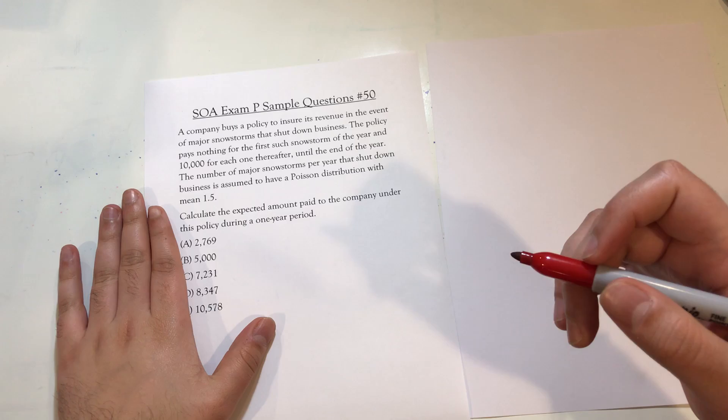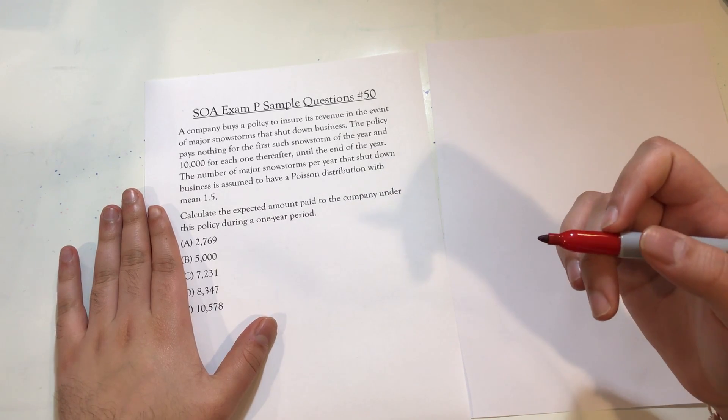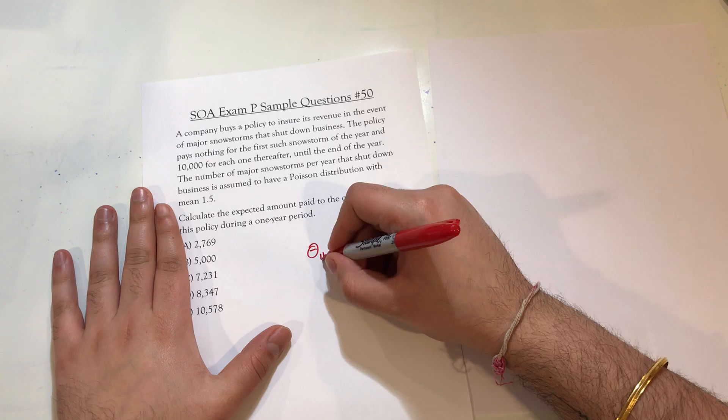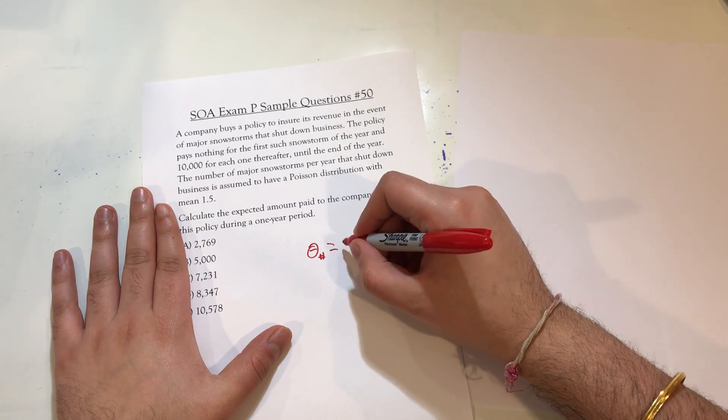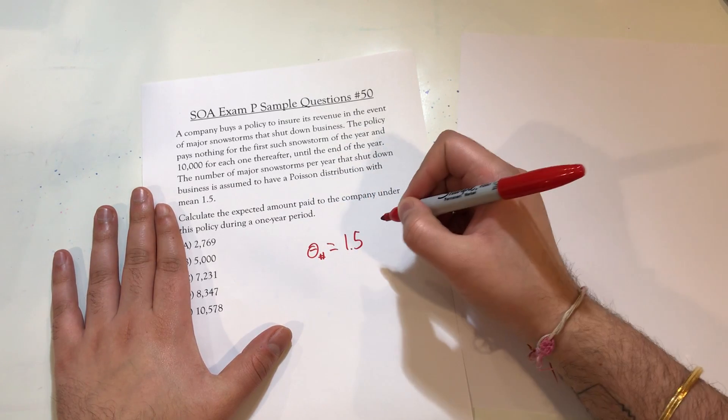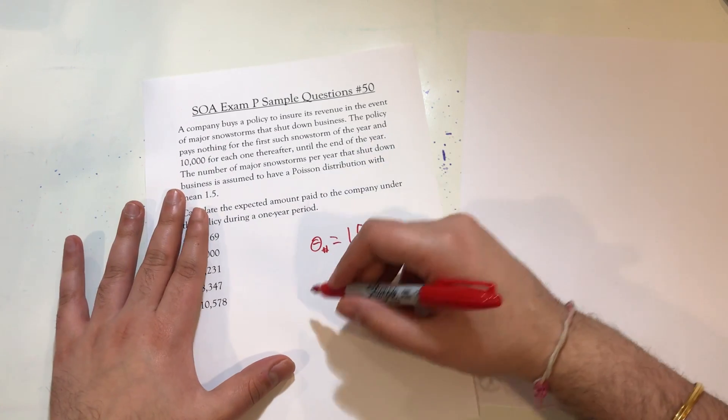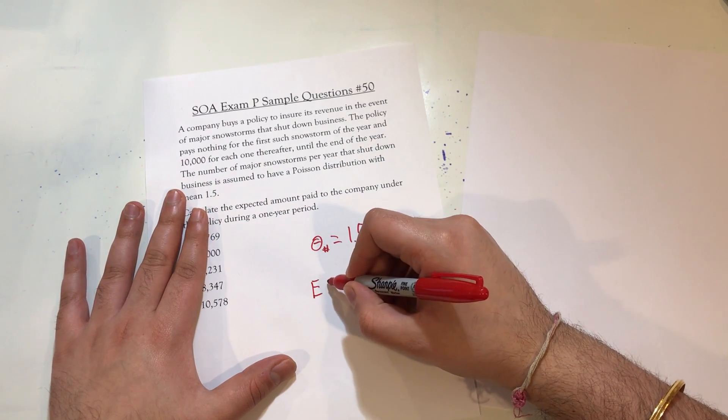The number of snowstorms have a Poisson distribution with mean 1.5, so lambda for the number of snowstorms equals 1.5. And we're asked to find the expected value of the payment.